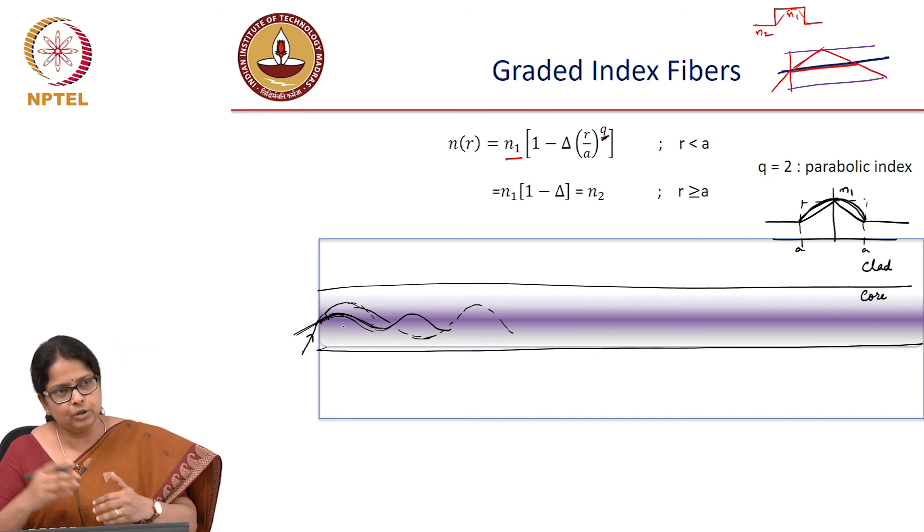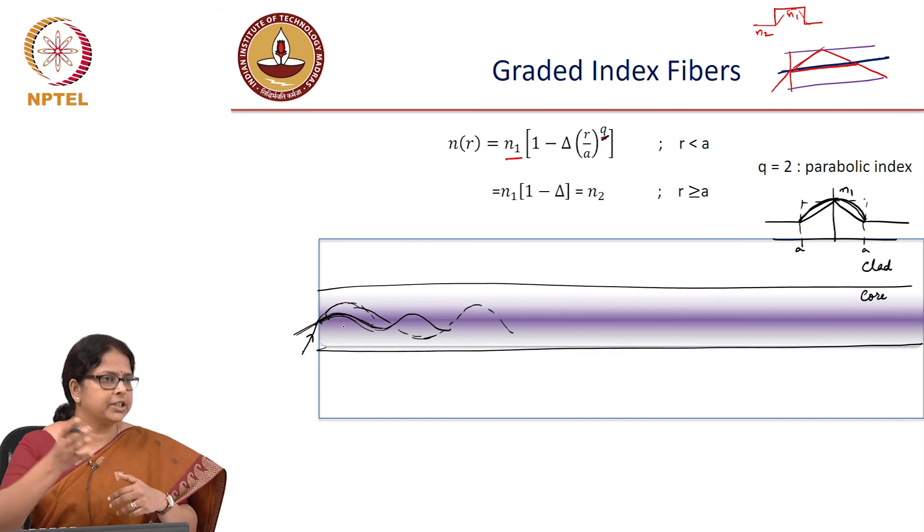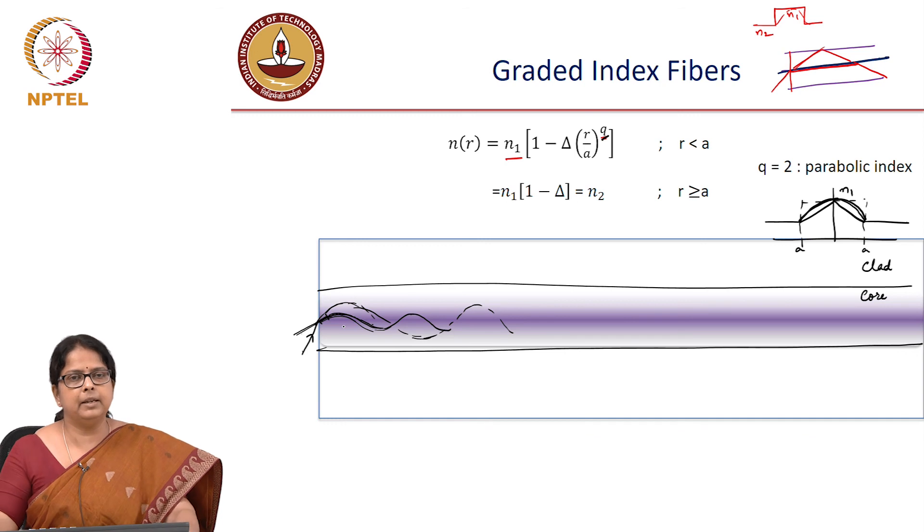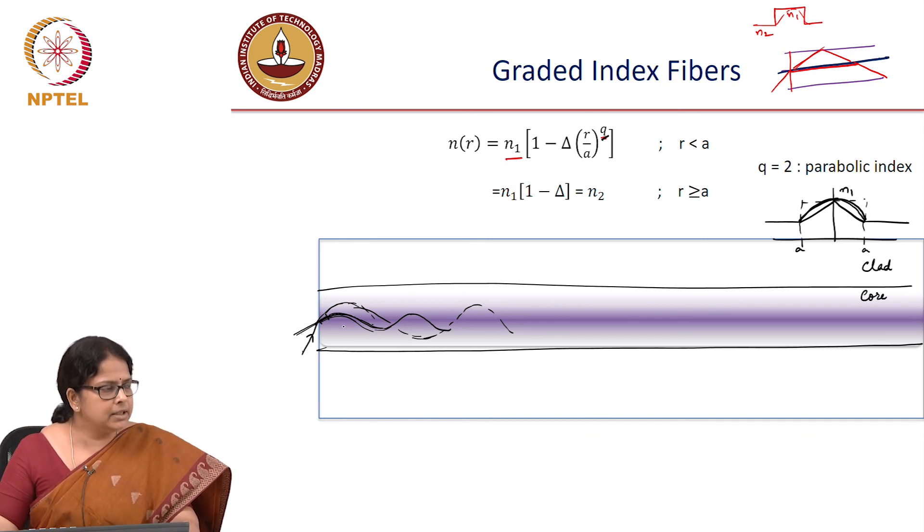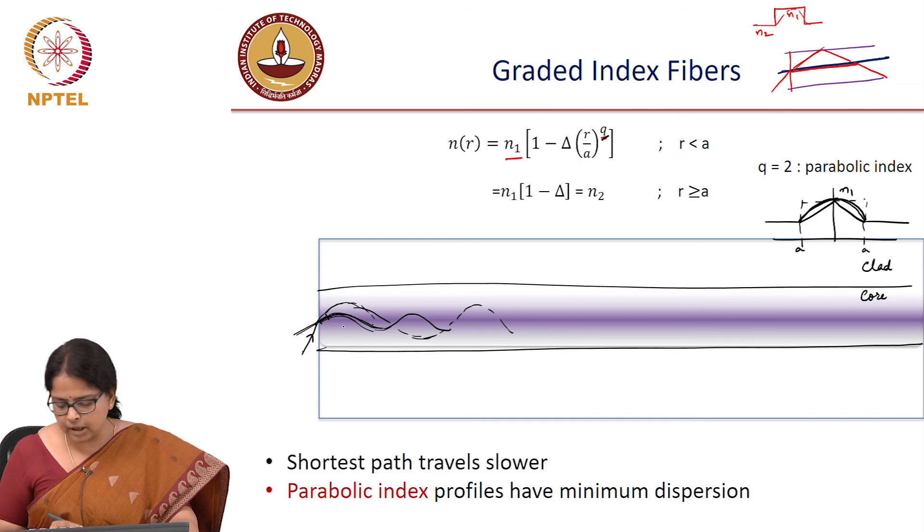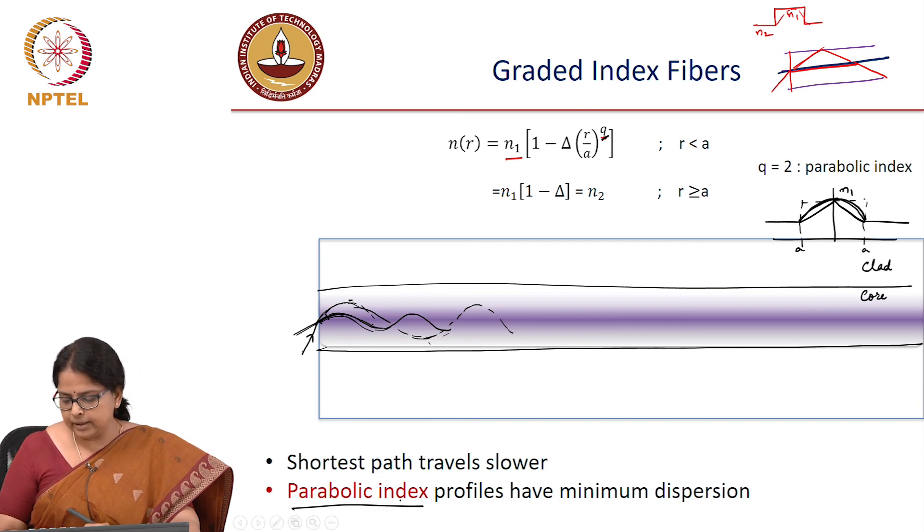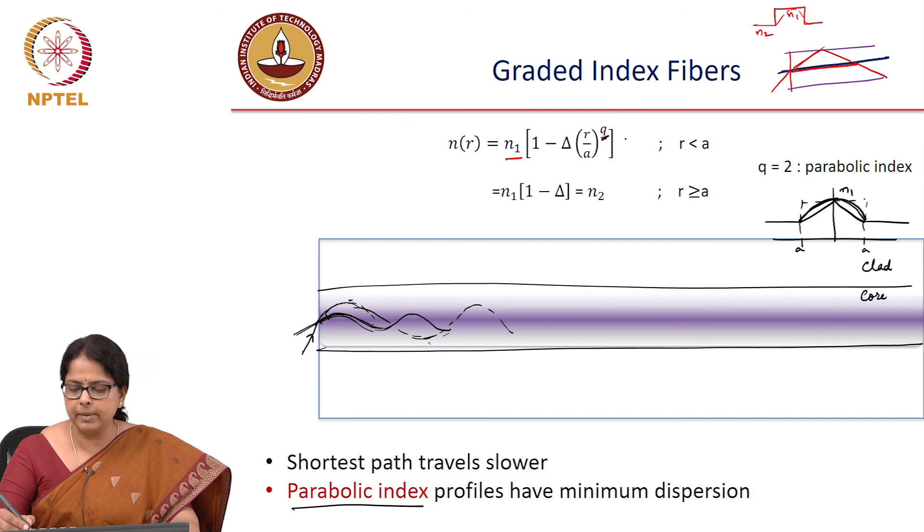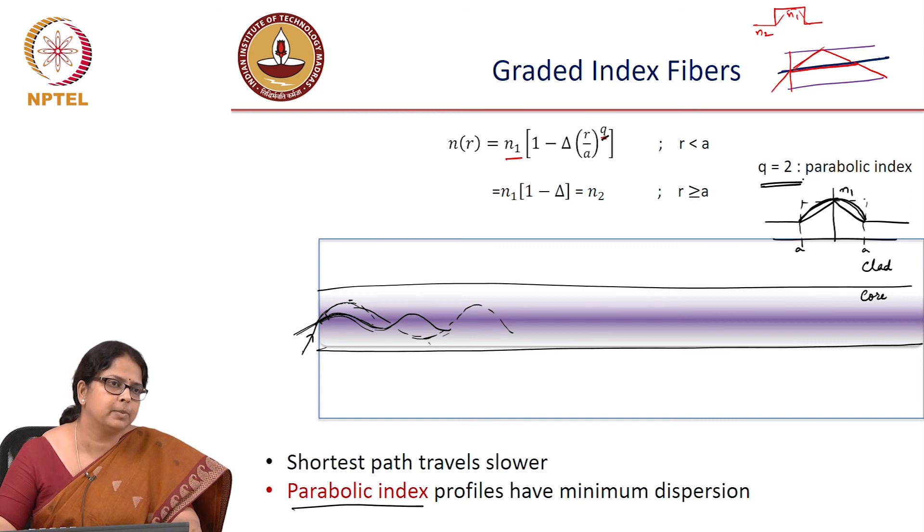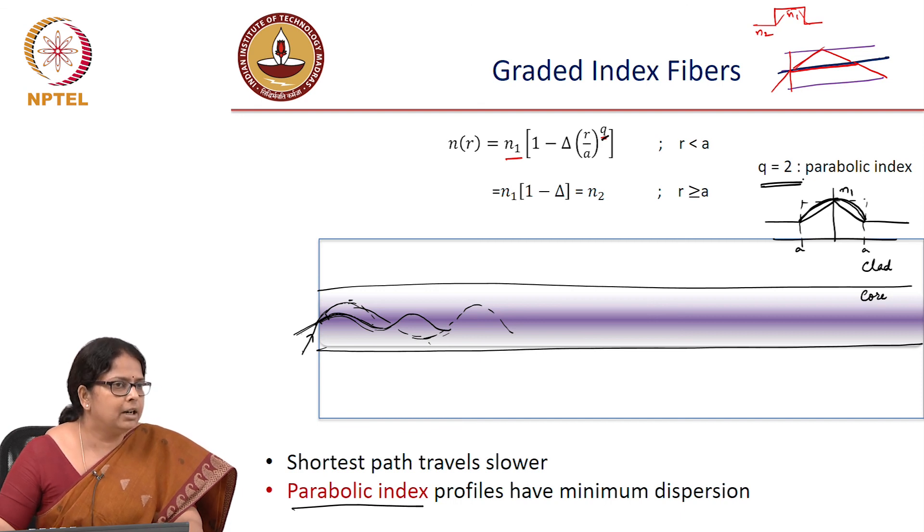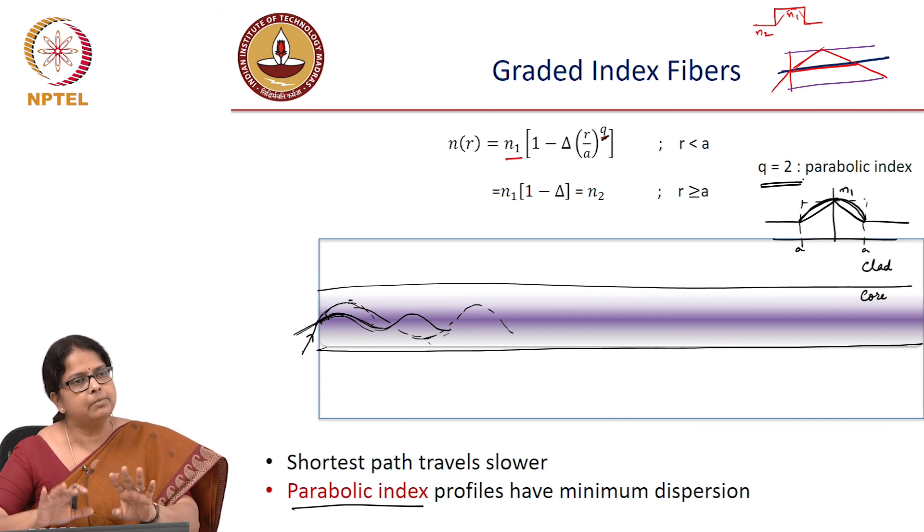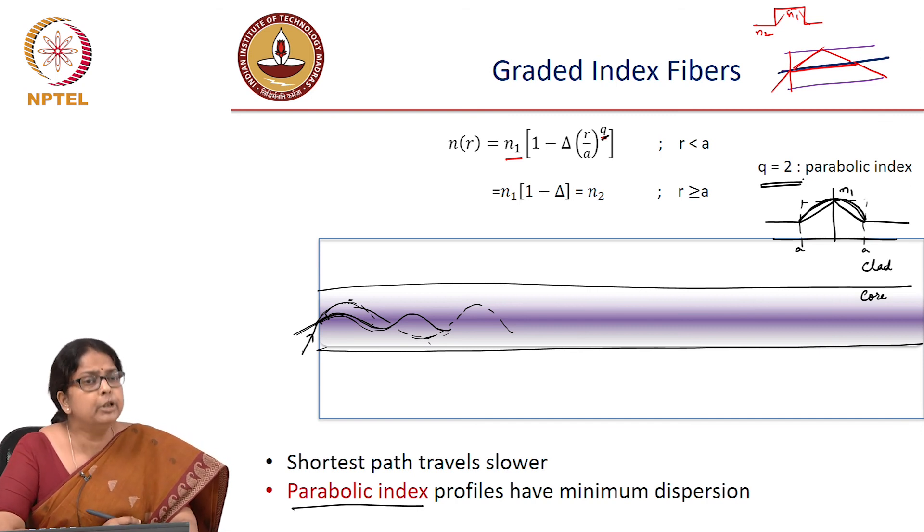You can do detailed mathematics of actually tracing the ray path for all of this. It is not a straight line path. It will be a shape decided by the refractive index profile. But it turns out that the shortest path is traveling slower and the longest path will travel faster because of the lower refractive index. It turns out that if it is parabolic, it will have minimum dispersion. If this Q number is equal to 2, you can mathematically prove that the dispersion is minimum. Dispersion is the difference between the shortest path and longest path that is minimum. You still cannot equalize the paths.